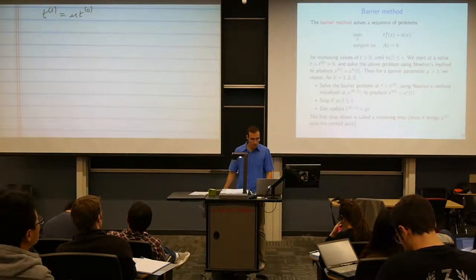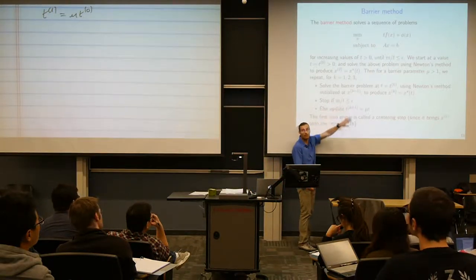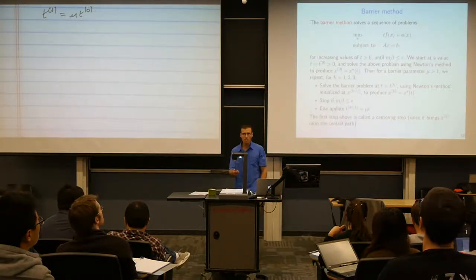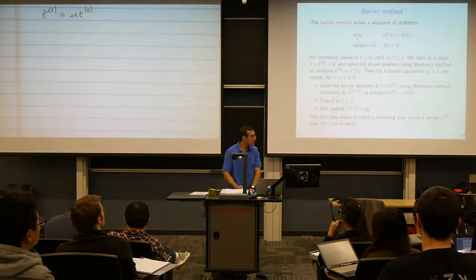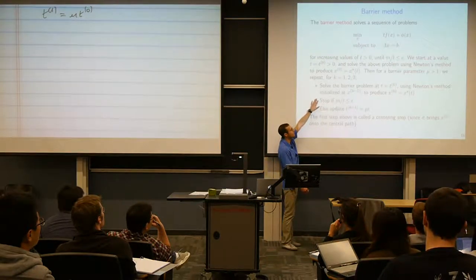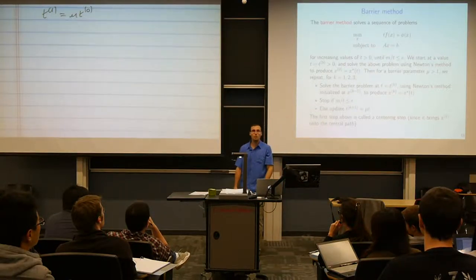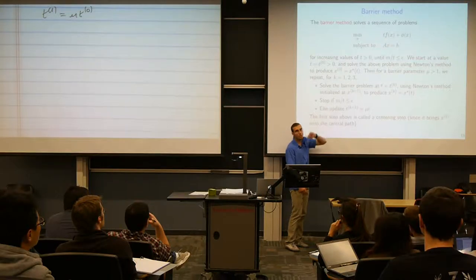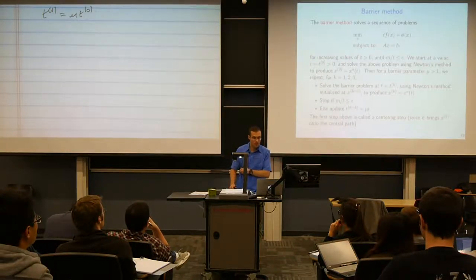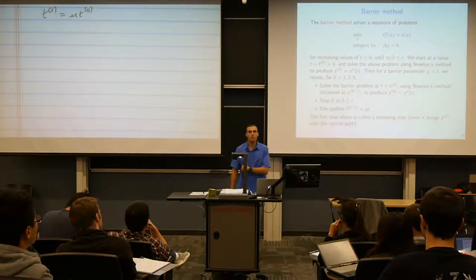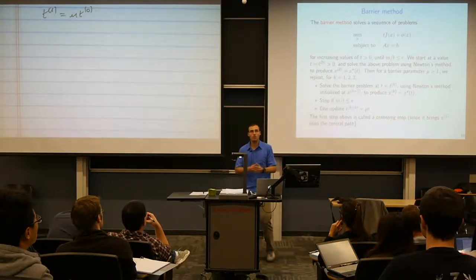This is a very nice method combining many elements we've learned. It uses a bona fide duality gap as a stopping criterion, guaranteeing the estimate is within ε of optimal. The inner loop uses Newton's method with equality constraints. It also has an interesting connection to duality — that's how we derived the duality gap and interpreted iterates via KKT conditions. We call each inner solve a centering step, because it brings us back onto the central path.